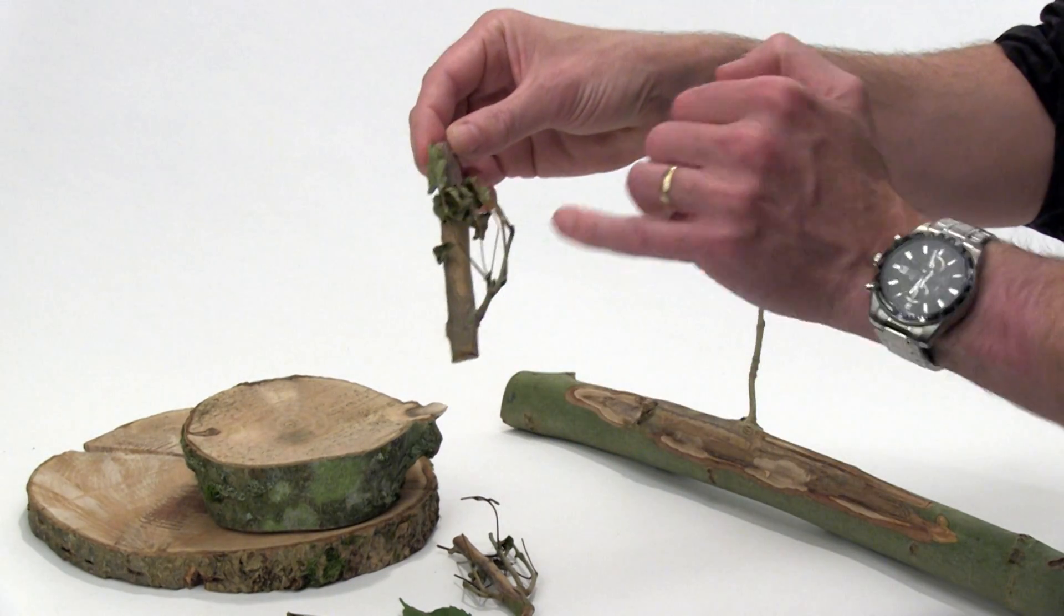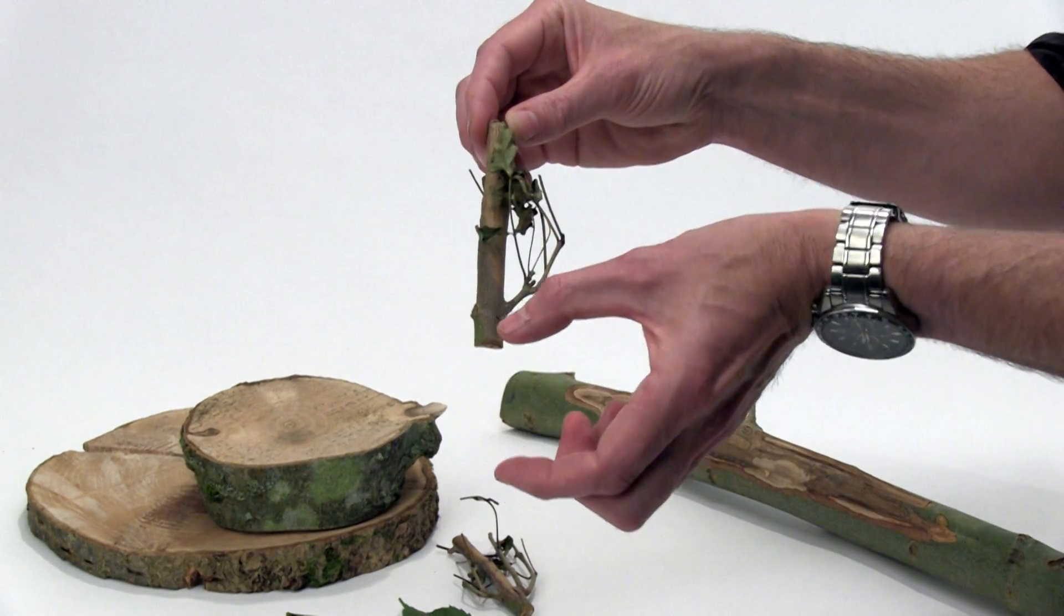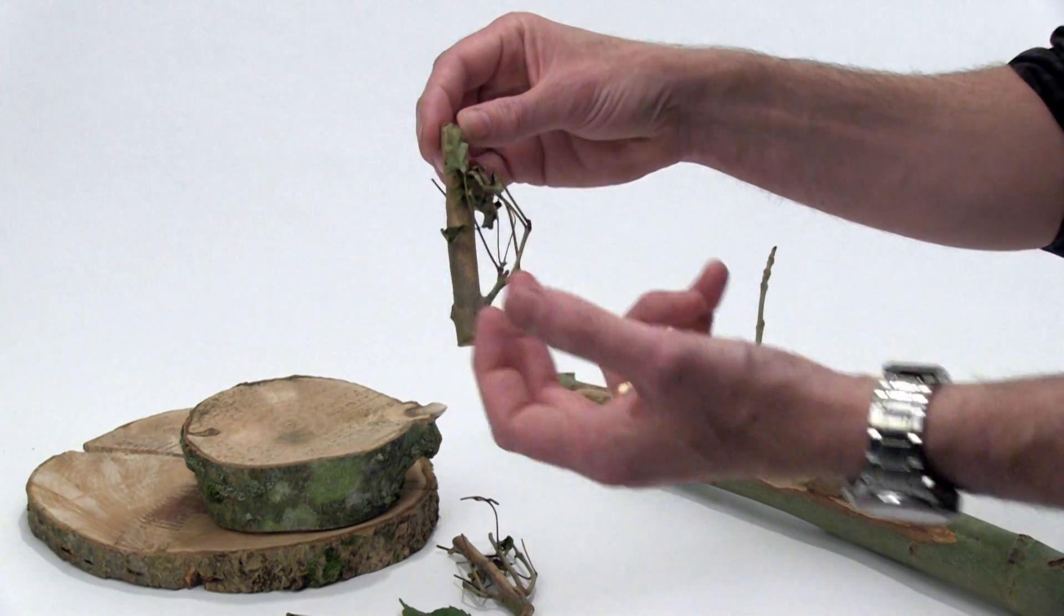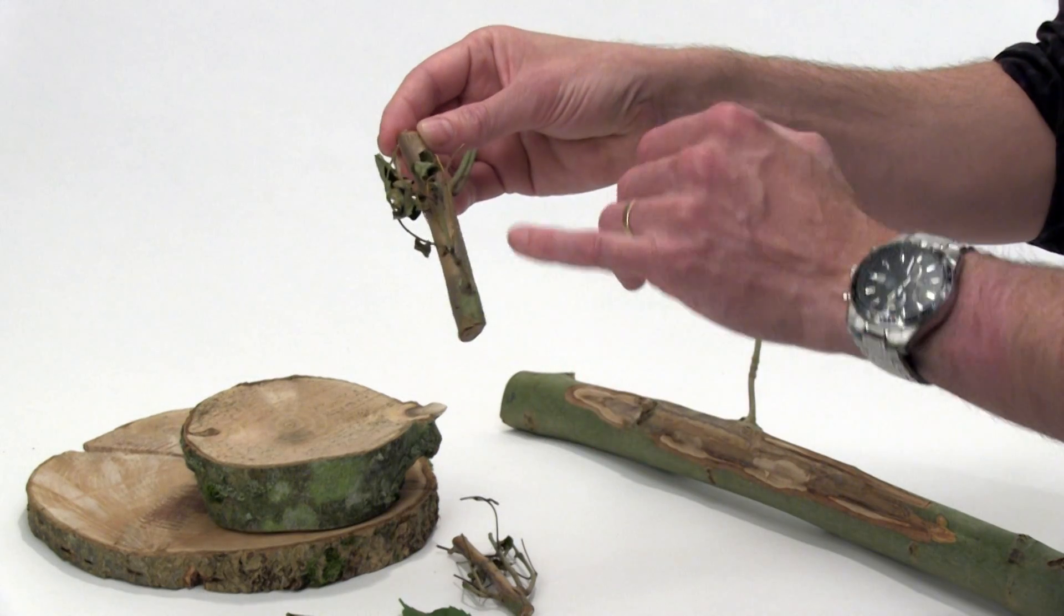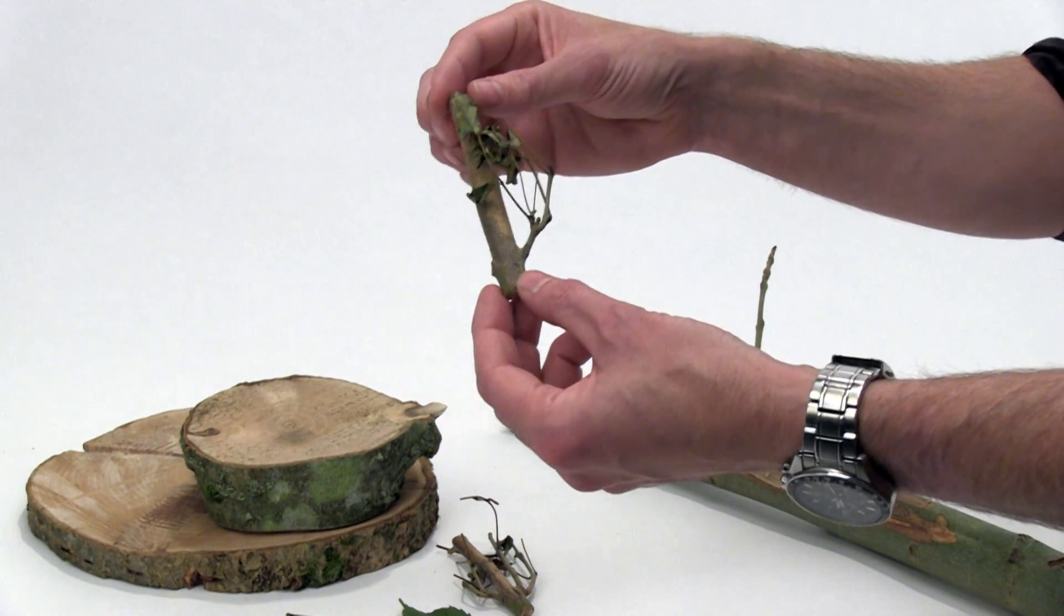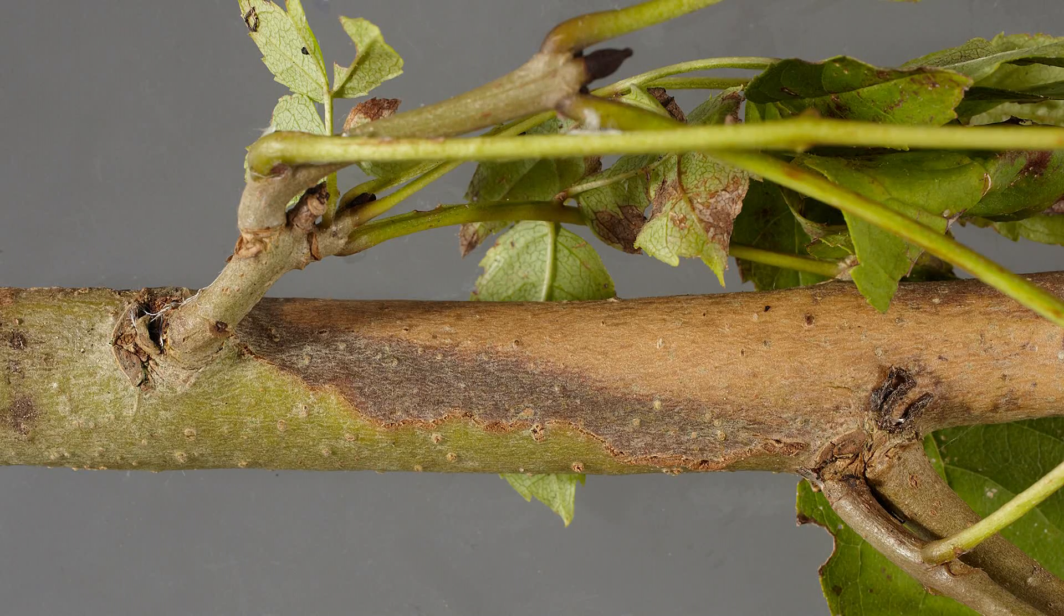So this lesion then will extend downwards and upwards as the fungus actually grows and kills the tissue in its path and you'll get what they call a canker, it's like a depression on the surface of the actual tree itself.